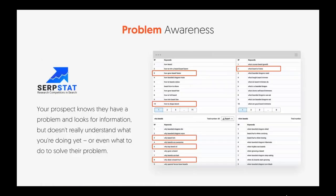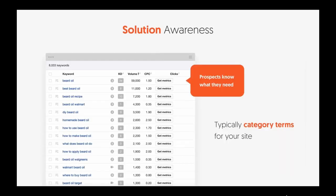If people are typing in 'why does my beard itch' and beard oil helps solve that, or 'how to make my beard grow faster' and beard oil solves that, then solution awareness keywords are things like 'beard oil,' 'best beard oil,' 'beard oil recipe,' 'beard oil Walmart,' 'DIY beard oil.' This is where you get metrics on volume, cost per click, and the keywords you should go after based on volume, keyword difficulty, and cost per click combined.